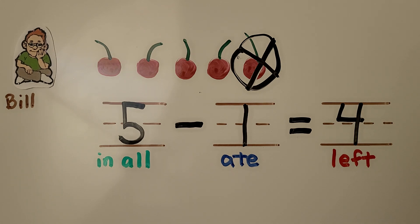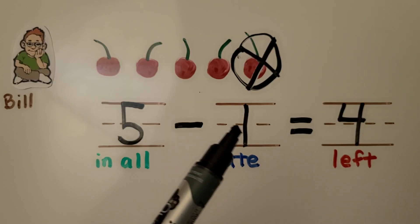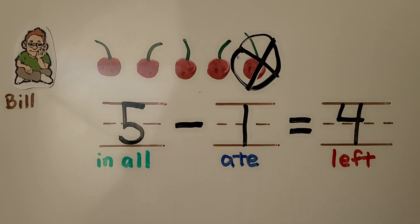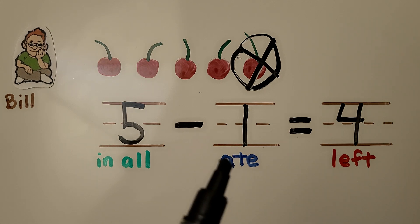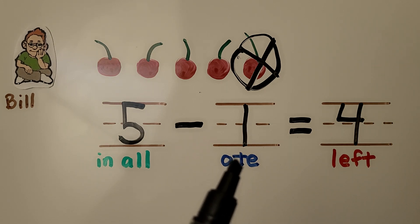Our equation shows the missing number after the minus symbol. Because we were told he ate some, but not the number — we don't know what that number was. We know how many in all, and we know how many are left over. We needed to find how many he ate.